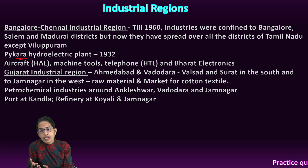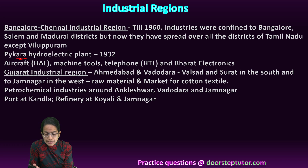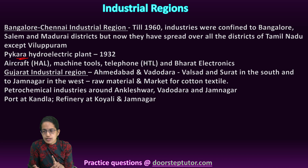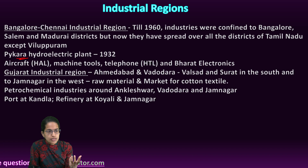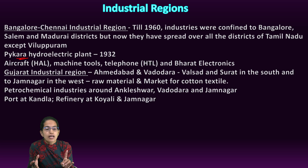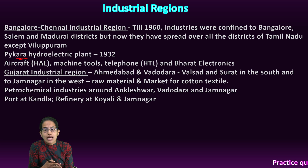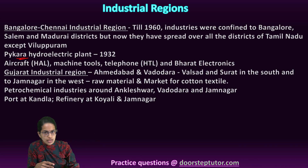Industries that came into the Bangalore-Chennai region include textile, wagon, matchbox, leather goods, light industries, medical industries, aluminum, sugar, cement, glass, fertilizers, and paper. Some of the major centers established were Hindustan Aeronautics Limited (HAL), Hindustan Machine Tools (HMT), Hindustan Telephone Lines, and Bharat Electronics. The Bangalore-Chennai industrial area thus developed as a major industrial zone.